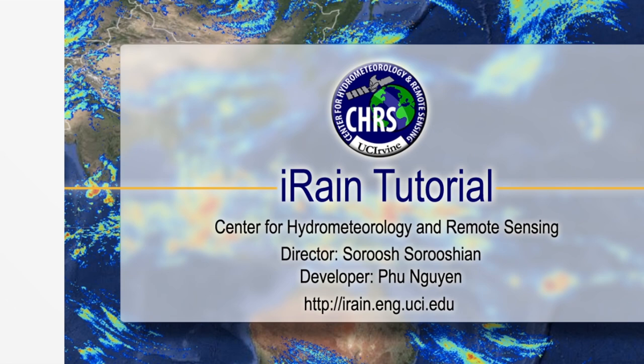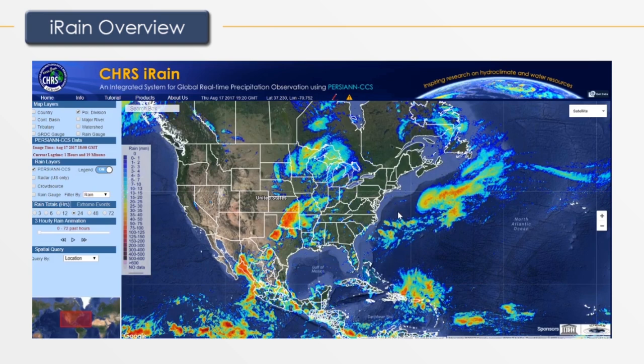Welcome to the iRain tutorial. This tutorial will cover how to use the iRain web interface. The iRain interface is composed of a reference map for easy navigation, options to choose a base map, and an interactive map.